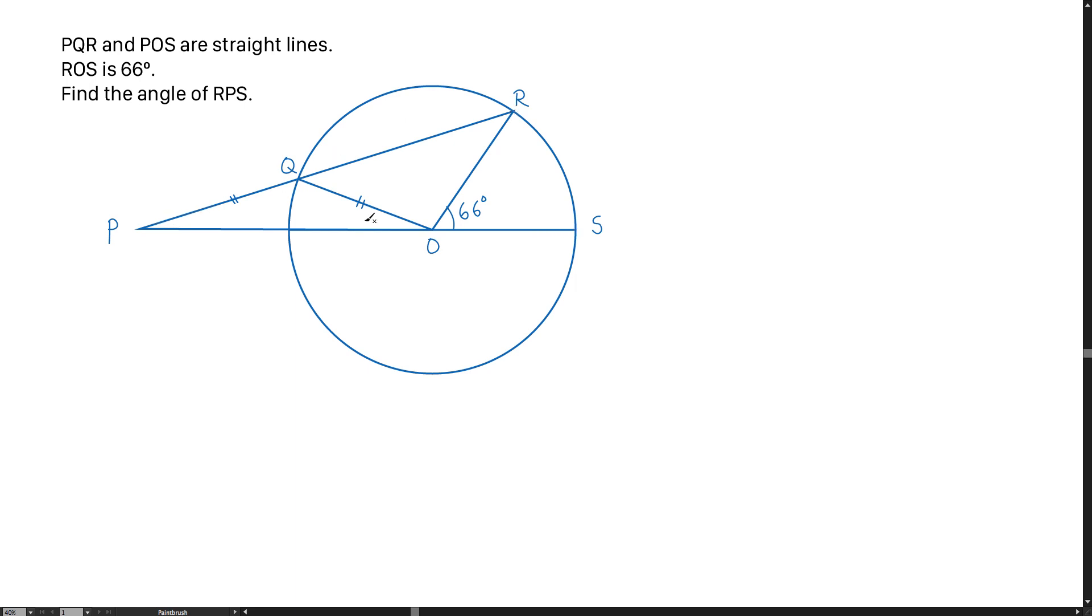RPS. So I'm going to label this angle as theta for RPS. Since the triangle PQO is an isosceles triangle, we are getting the same angle here for POQ. I'm going to label another angle, which is alpha.